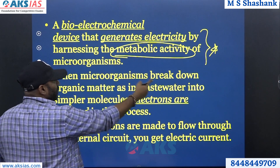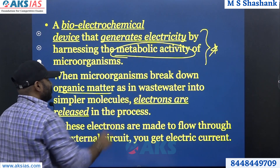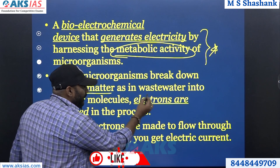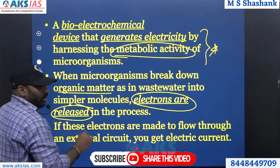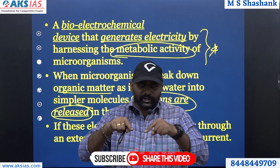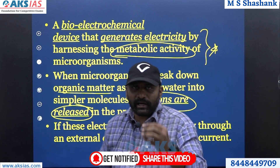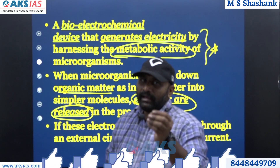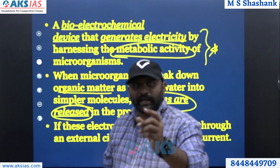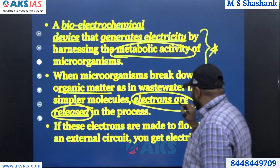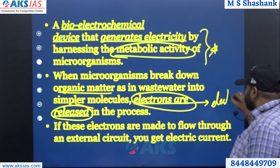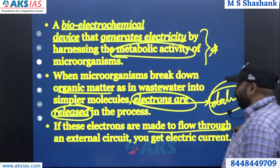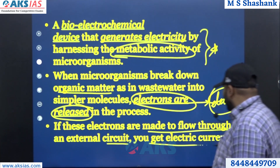When microorganisms break down organic matter — such as waste water — into simpler molecules, electrons are released. Once electrons are released in the process of breaking the waste material, you can convert that into current. When electrons are released, you collect them and generate electricity. If these electrons are made to flow through an external circuit, you get electric current.